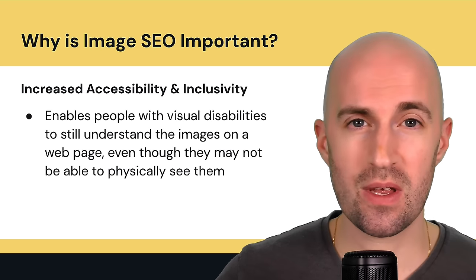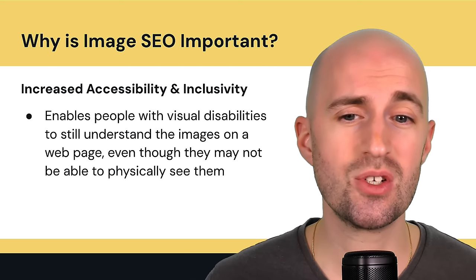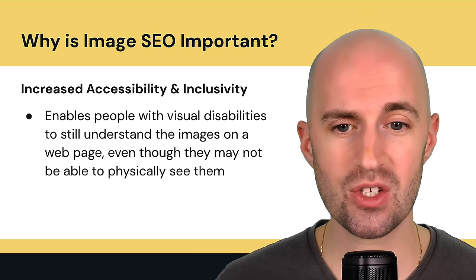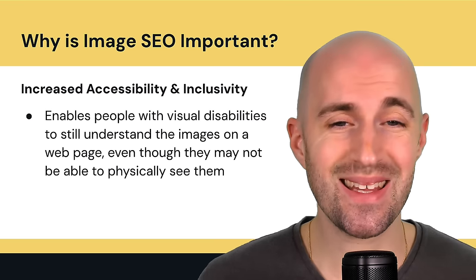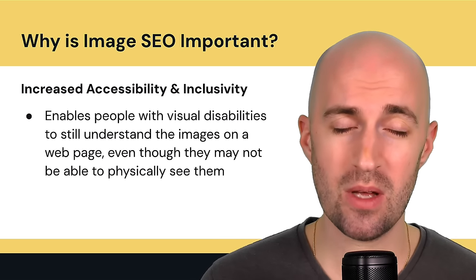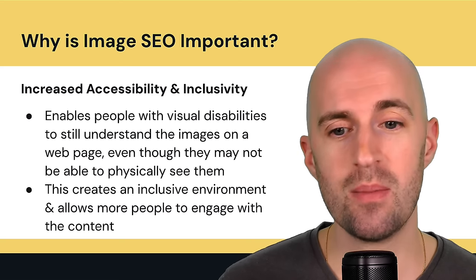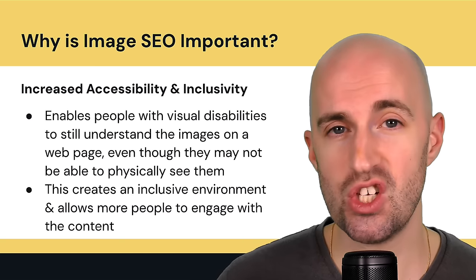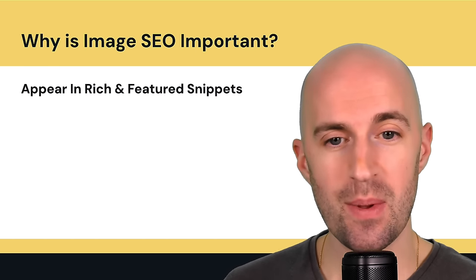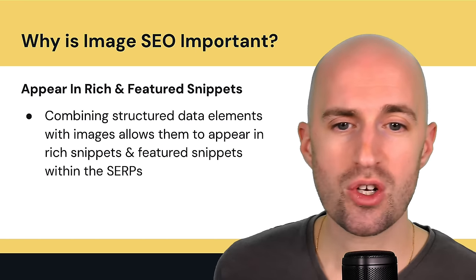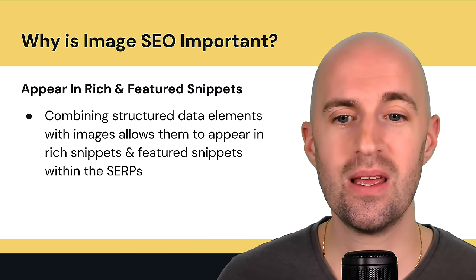Increased accessibility and inclusivity: optimizing images in specific ways enables people with visual disabilities to still understand the images on a web page. Even though people with visual impairments may not be able to physically see them, they'll still understand what the image is. This creates an inclusive environment and allows more people to engage with the content.